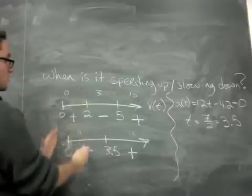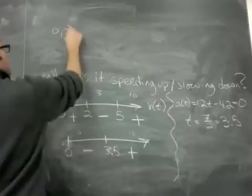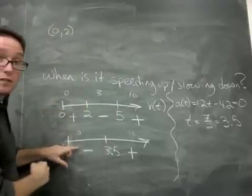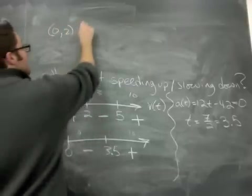So from 0 to 2, that's the first little interval. What's going on? It's plus and minus. So if they don't match, it's slowing down.